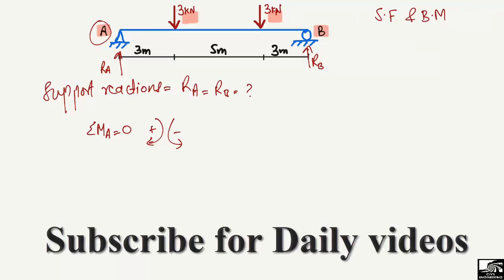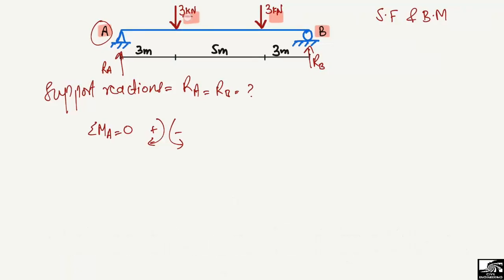Starting from the loads: each load will create a moment about point A. However, the reaction RA passes through point A, so it cannot create any moment there because the moment arm is zero. Moment equals force times moment arm, so with a zero moment arm, RA contributes no moment.